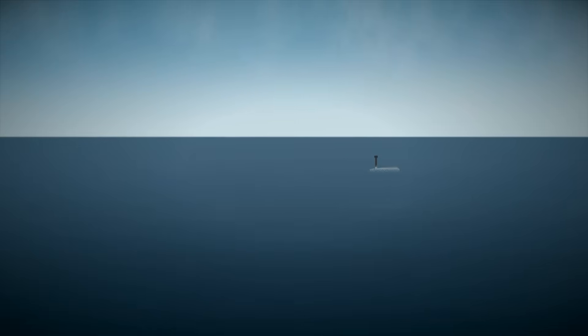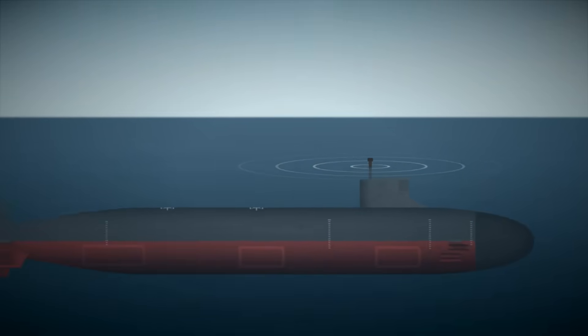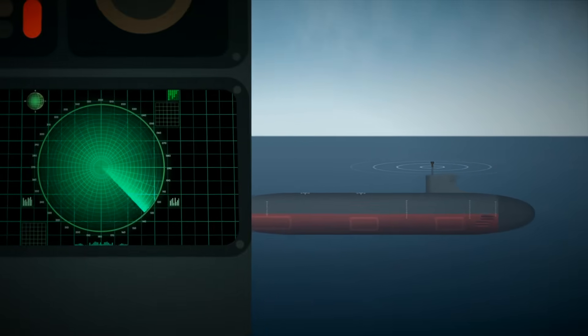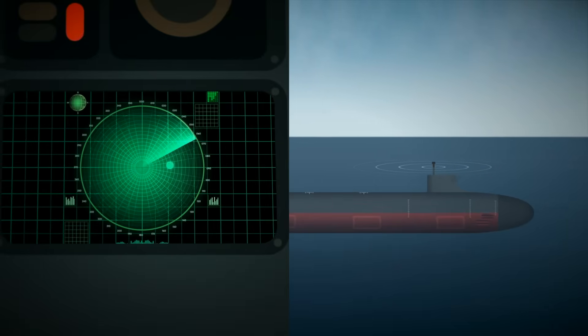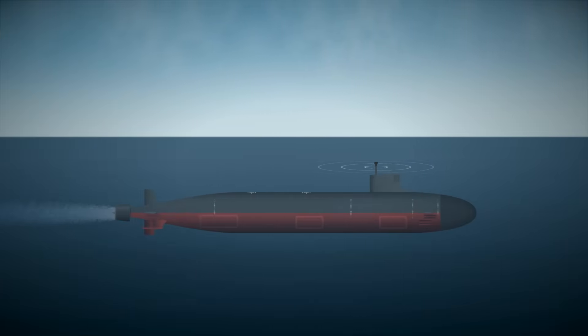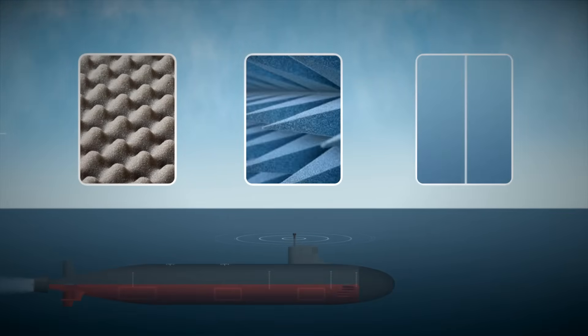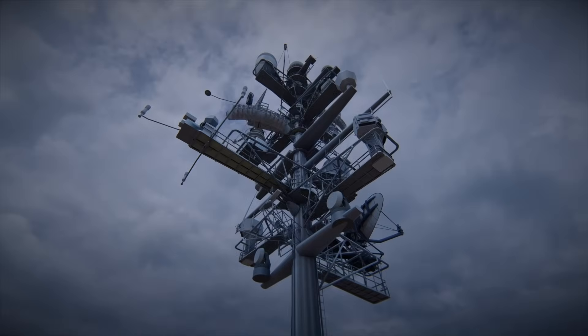Even radar can be a threat, especially when a submarine surfaces or raises a periscope. That tiny mast might not look like much, but if it reflects radar waves, it turns into a bright spot in the sky for surveillance aircraft. That's why periscopes and antennas are now designed with stealth in mind, as you find in modern stealth aircraft like the B-2 Spirit. Angled surfaces, radar absorbent materials, and coatings that scatter signals instead of bouncing them back to the source.